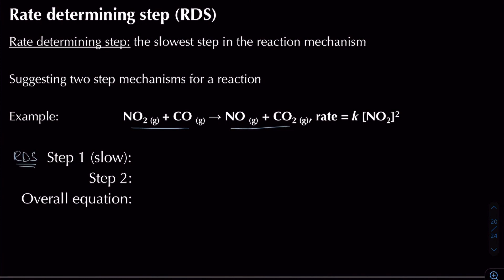If we're asked to suggest a two-step mechanism for a reaction, we need to make the following assumption: whatever is shown in the rate equation — such as nitrogen dioxide here — is going to be the reactants in our first step, our slow step. You can see I've got two lots of them, because the stoichiometry is equal to the order itself in this instance. Normally when you deal with rate equations, the order has nothing to do with stoichiometry, but when you deal with the rate determining step, that's when the order becomes important in terms of stoichiometry.